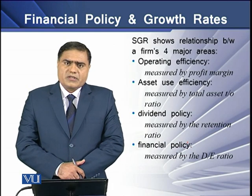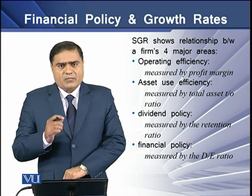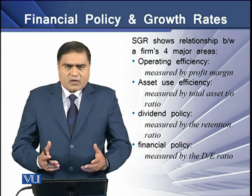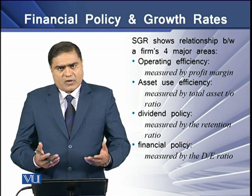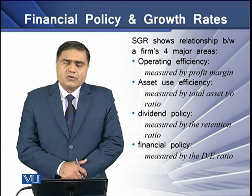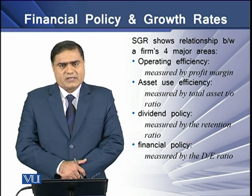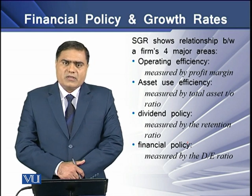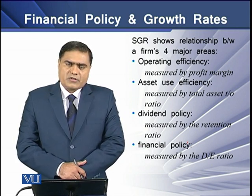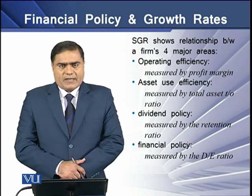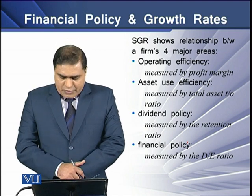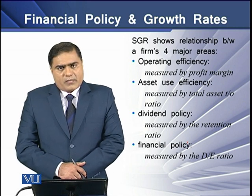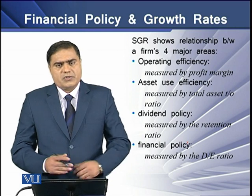Sustainable growth rate shows the relationship between four major areas a firm needs to concentrate on. The first is operating efficiency, measured by profit margin — which may be operating profit ratio, gross profit ratio, or EBIT. The second is asset use efficiency, determined by the asset turnover ratio. The third is dividend policy, proxied by the dividend retention ratio. The fourth is financial policy — the composition of debt-equity ratio the firm wants to maintain.